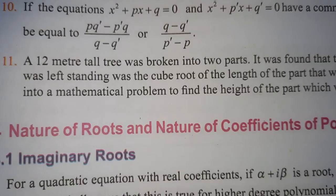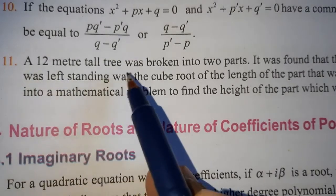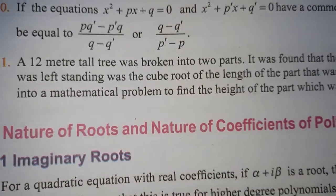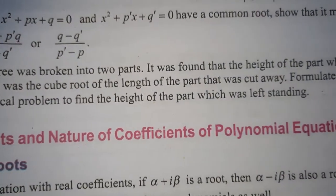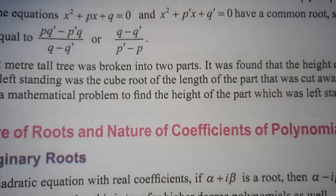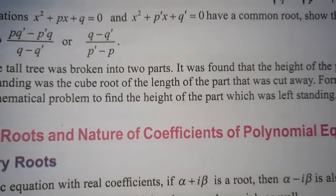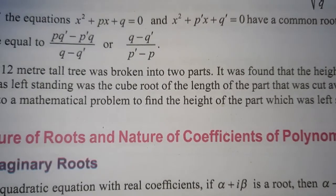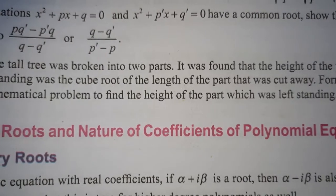Exercise 3.1, Question number 11. A 12 meter tall tree was broken into two parts. It was found that the height of the part which was left standing was the cube root of the length of the part that was cut away. Formulate this into a mathematical problem to find the height of the part which was left standing.